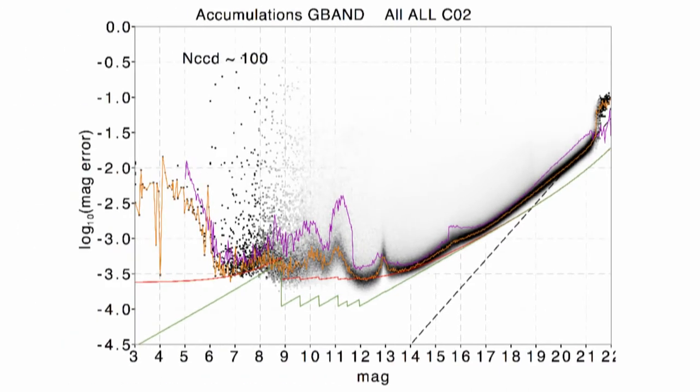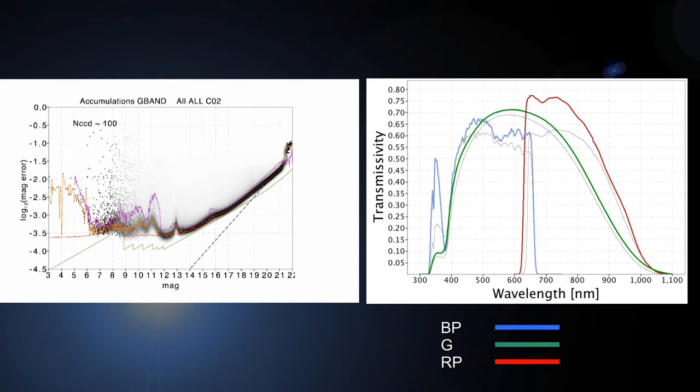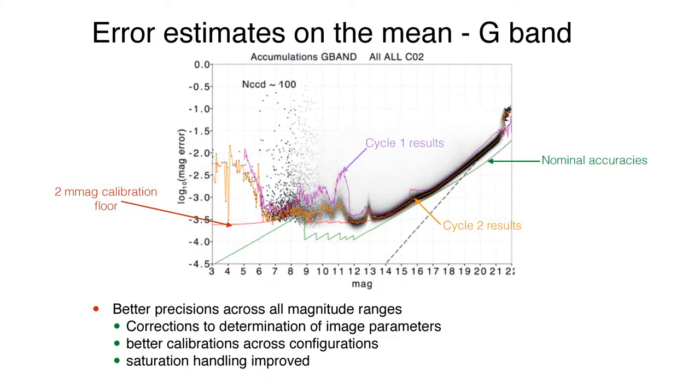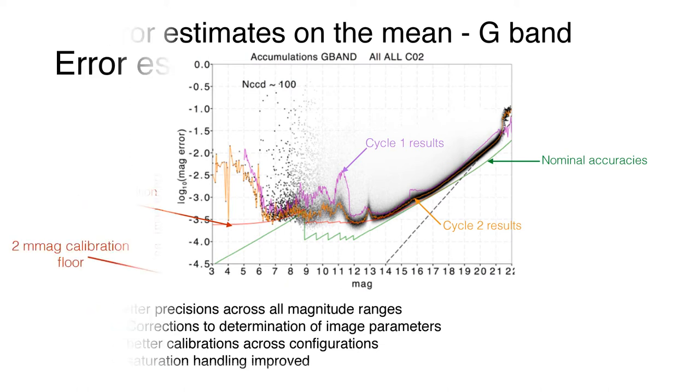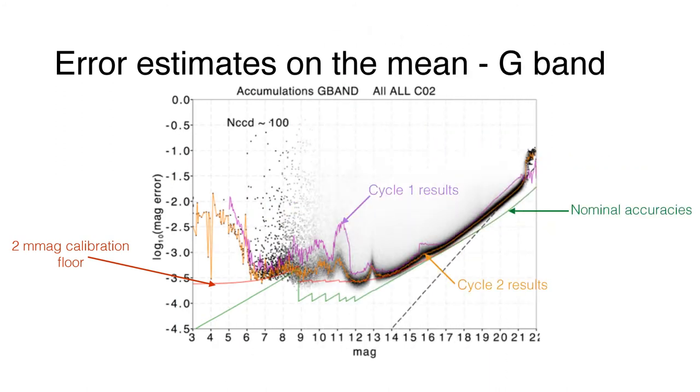To show the quality of the photometry, we can plot the error on the mean photometry as a function of magnitude for sources with a specific number of observations. This allows us to compare the results with respect to the nominal mission expectations and to the previous data release. For the G-band, the precisions have improved across the whole magnitude range in comparison to the first data release. This is due to the better determination of the image parameters, improving the performances at the faint end, and better calibrations in general.